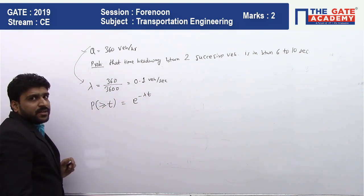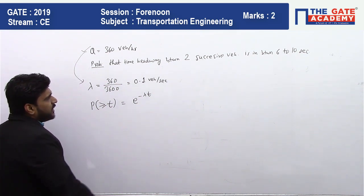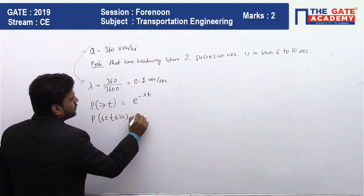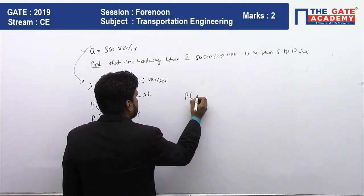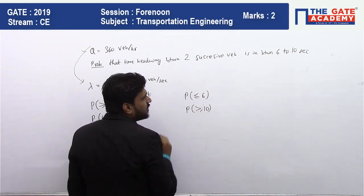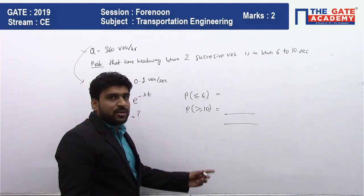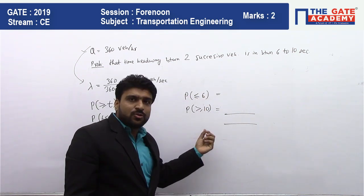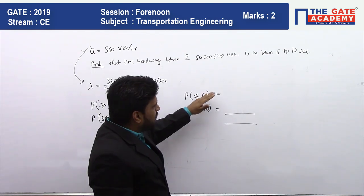We know the formula: probability that headway is greater than time t equals e to the power of negative lambda times t. We need the probability in between 6 to 10 seconds. So we find the probability of less than 6 seconds and the probability of greater than 10 seconds. We don't need vehicles coming in less than 6 seconds or greater than 10 seconds.